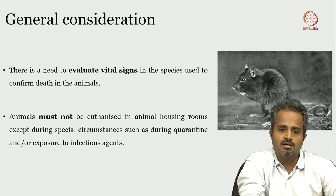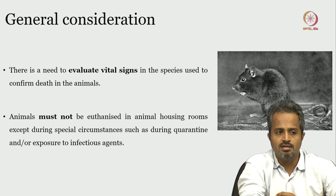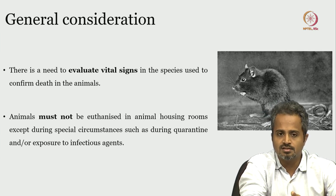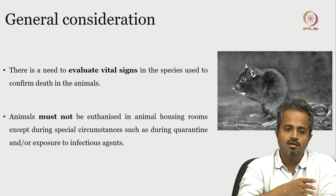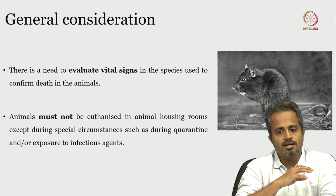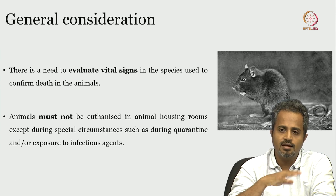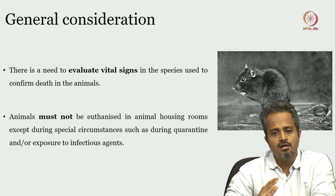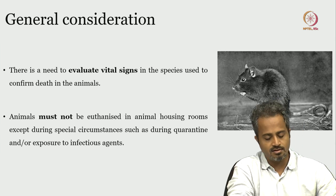Another important consideration is that euthanasia is never done in the animal housing rooms except in very special circumstances where the animal has acquired some sort of infectious disease. In order to prevent transmission of infectious agents to other places, euthanasia is done in the animal housing in that case. Except for this special circumstance, it must be done in a euthanasia chamber or a dedicated facility, and the animal must be transferred from its housing or experimental arena to the euthanasia area.